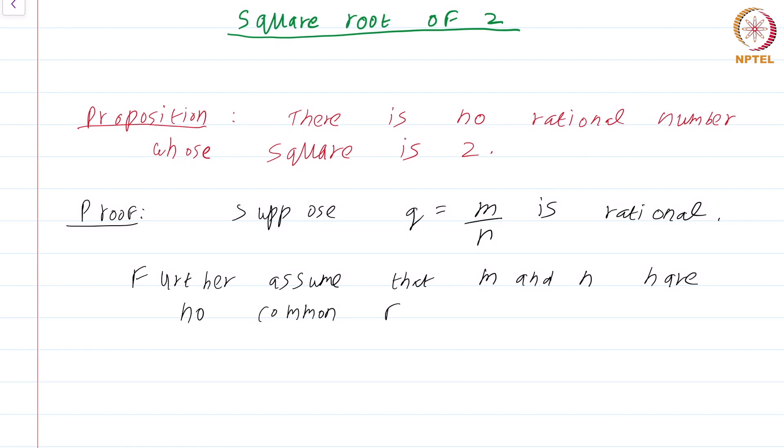We can assume that simply because if there is a common factor between m and n, I just cancel it out. I can get rid of all the common factors and put q in its lowest form.